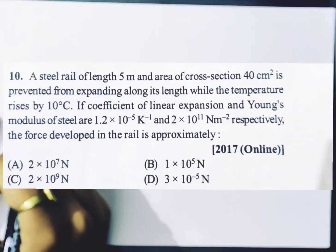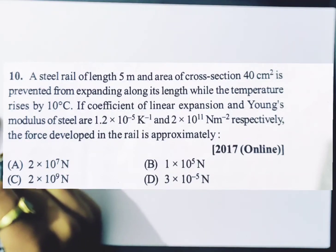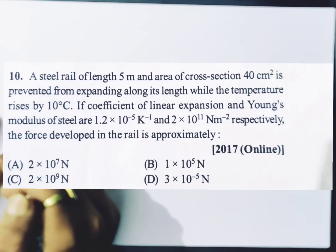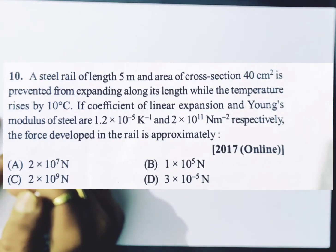A steel rail of length 5 meters and area of cross-section 40 cm² is prevented from expanding along its length while temperature rises by 10 degrees C. The coefficient of linear expansion and Young's modulus of steel are 1.2×10⁻⁵ per Kelvin and 2×10¹¹ Nm⁻² respectively. The force developed in the rail is approximately.